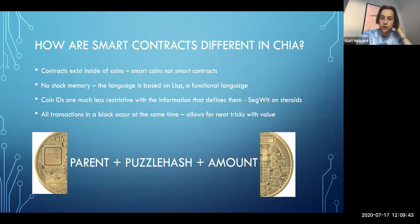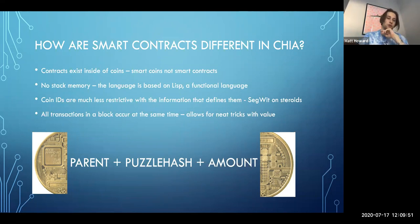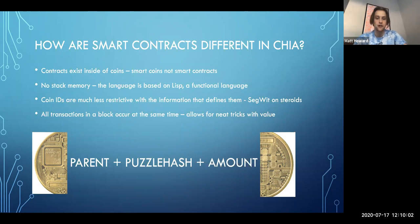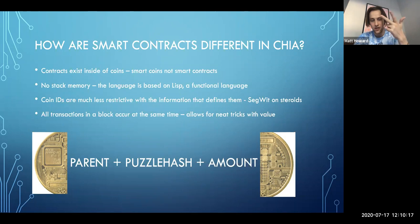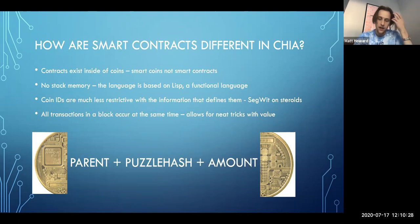Chia uses a Lisp-based functional language, which gets rid of the stack memory problems. We also have much less information when calculating a coin's ID — like segregated witness in Bitcoin, but taken further. The minimum viable coin ID consists of the parent ID, the puzzle hash, and the amount. The puzzle hash is a commitment to a puzzle — the contract inside the coin. When you spend it, you reveal the puzzle's source and the code runs as part of the spend.